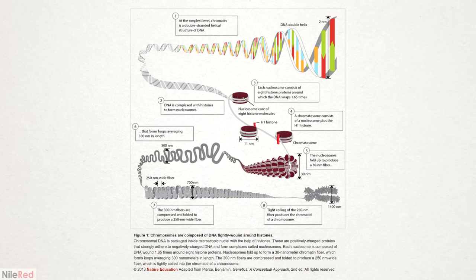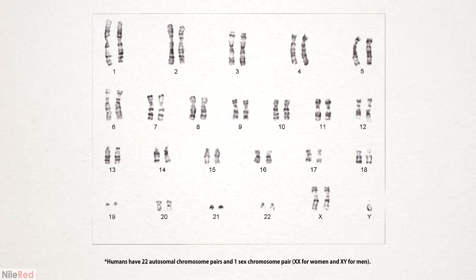This is not how DNA looks in the cell though. It's associated with a whole ton of proteins that pack it together into a super small volume. It progressively gets packed tighter and tighter until we eventually get something called a chromosome, which is the smallest DNA-based structure that you can see under a typical microscope. Each chromosome contains a different set of genes, and for humans we have 23 pairs of chromosomes, so 46 in total.